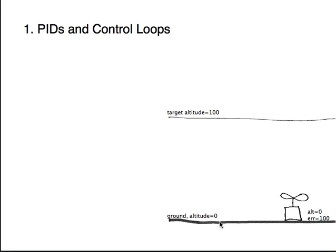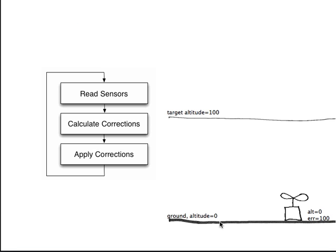So the first thing is we talk about PIDs and control loops. The PID stands for Proportional Integral Derivative. That's the math part. The control loop is basically straightforward. You've got a CPU on a quadcopter doing three things: reading the sensors, it might be reading a gyro, an accelerometer, some combination of all that. It's calculating corrections, and then applying those corrections to the aircraft.